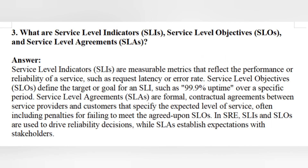Question three: what are Service Level Indicators, Service Level Objectives, and Service Level Agreements? Service Level Indicators (SLIs) are measurable metrics that reflect the performance or reliability of a service, such as request latency or error rate. Service Level Objectives (SLOs) define the target or goal for an SLI, such as 99.9% uptime over a specific period.